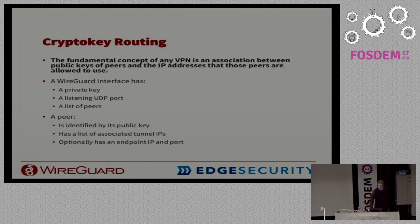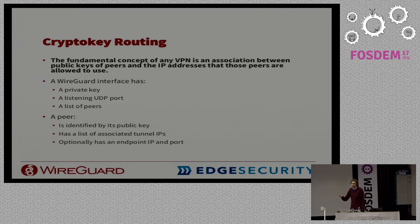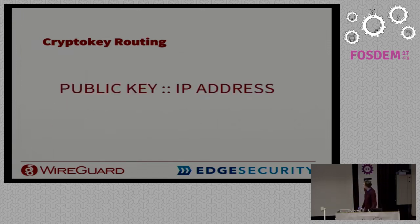The fundamental idea of WireGuard is crypto key routing. The idea is you have a peer, and you have a list of IP addresses that peer is allowed to be. The peer is identified by a public key, so you always have a mapping between public keys and IP addresses. The WireGuard interface WG0 itself has its own private key, a listening UDP port, and a list of peers it can talk to. Each peer is identified by its public key, a list of allowed IPs, and optionally the endpoint on the internet — the other UDP port you're talking to.